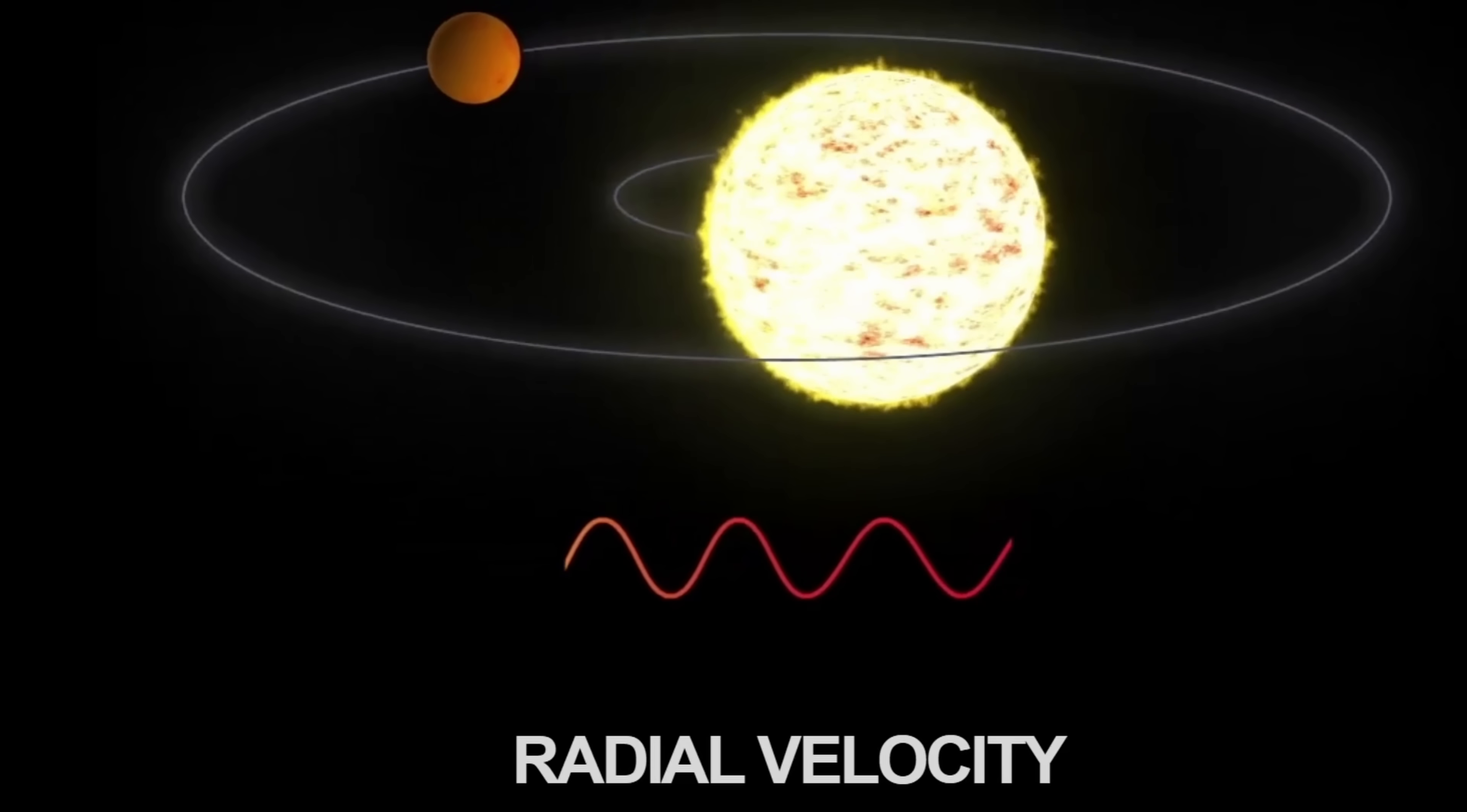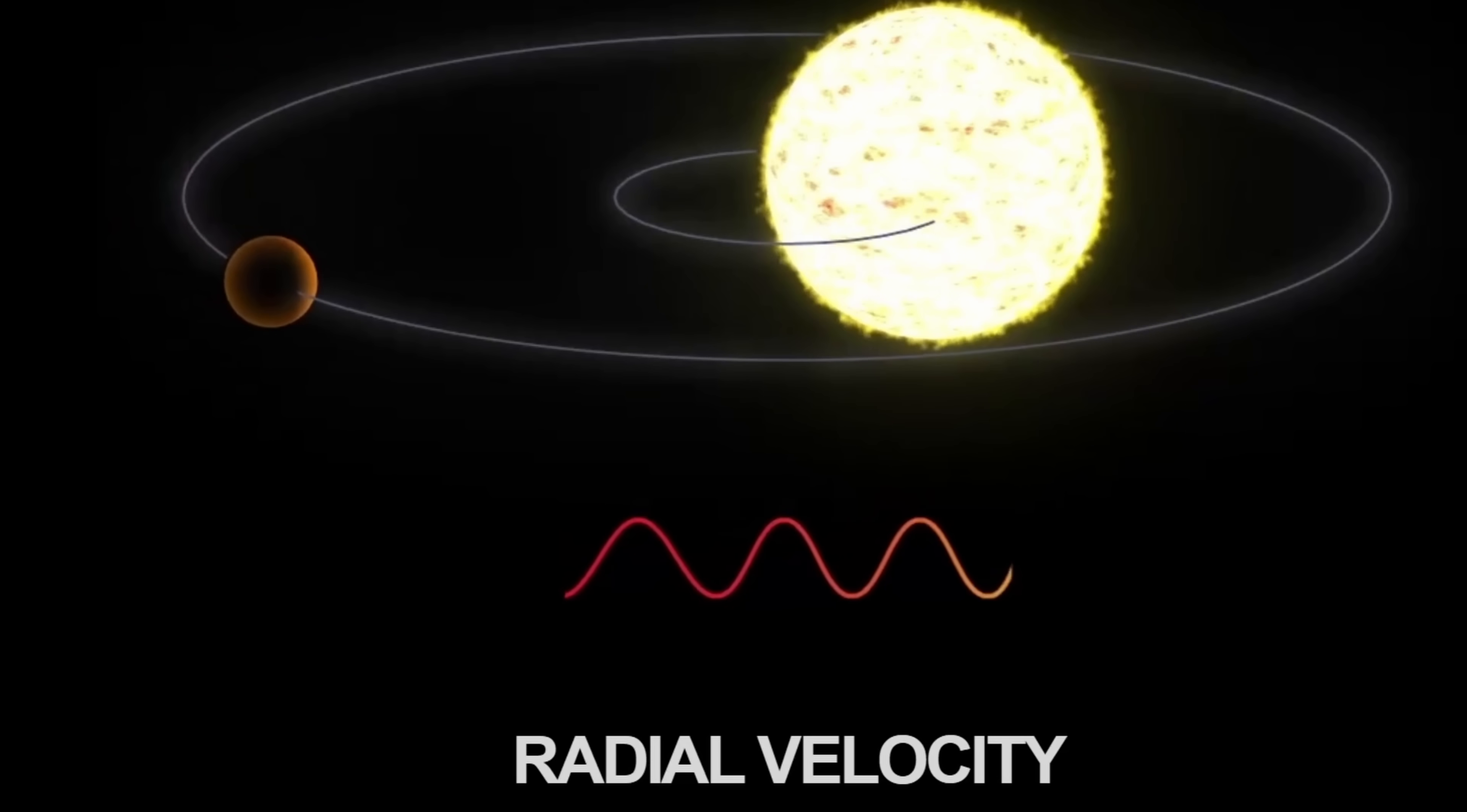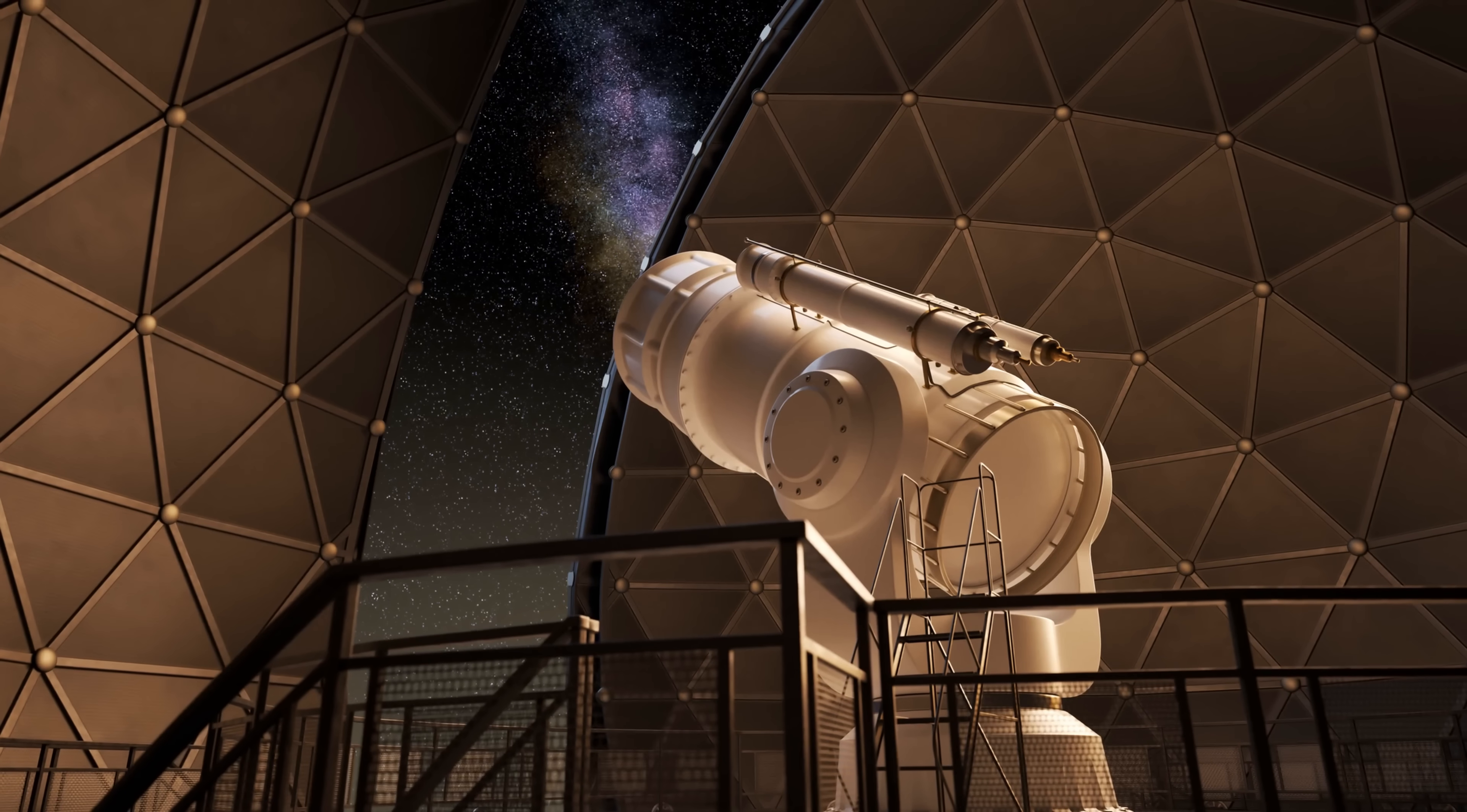Observing the motion of the wobble of the star by looking at the miniature redshift and blueshift anomalies. That's how the scientists know its exact mass, and how they are able to work out the exact orbit. And so in this study.